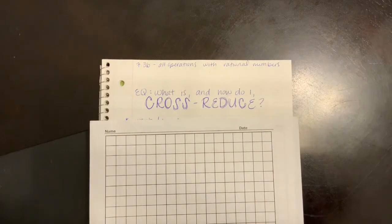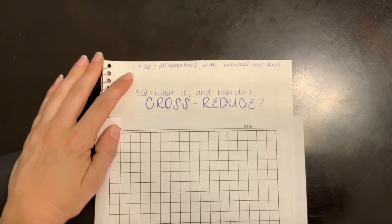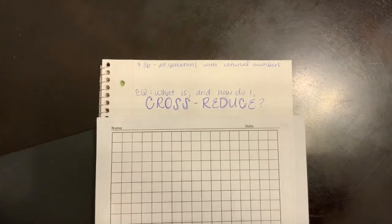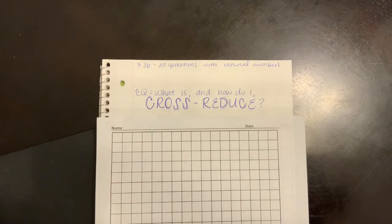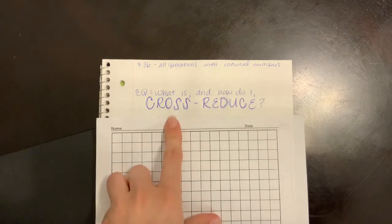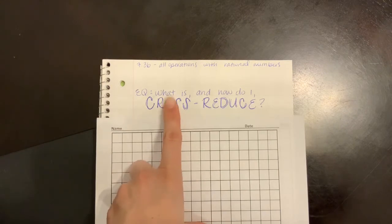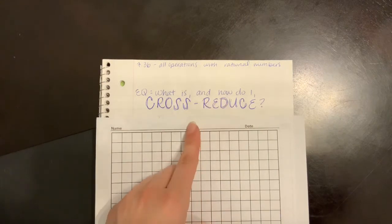Hey beauties, we're going to set up our notes how we always do. We are still in 7.3b. It's basically just all operations with all rational numbers. We are specifically dealing with fractions though. Our essential question that we're going to be answering is, what is, and how do I, cross-reduce?